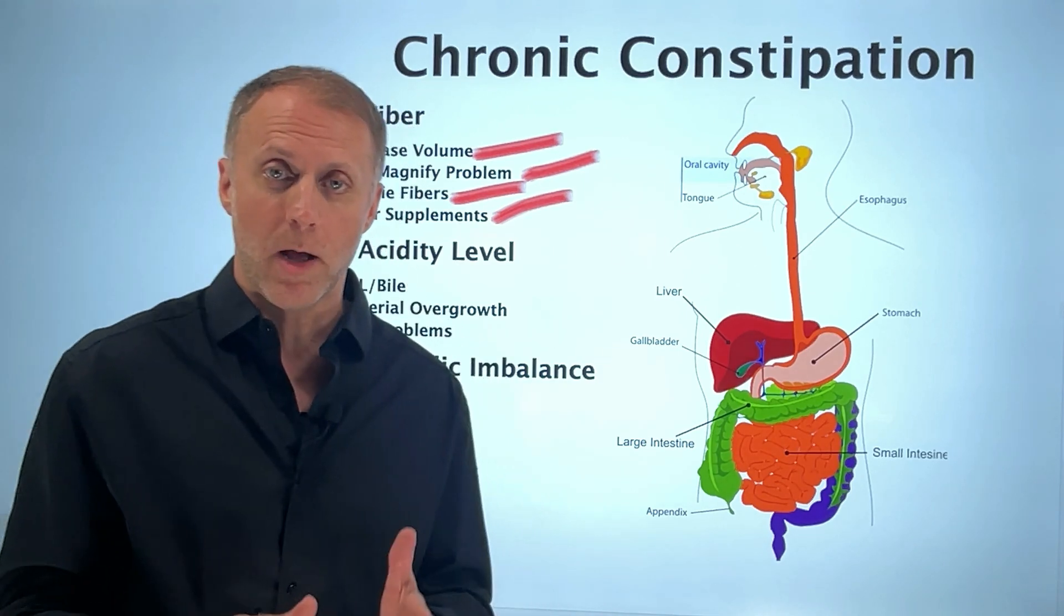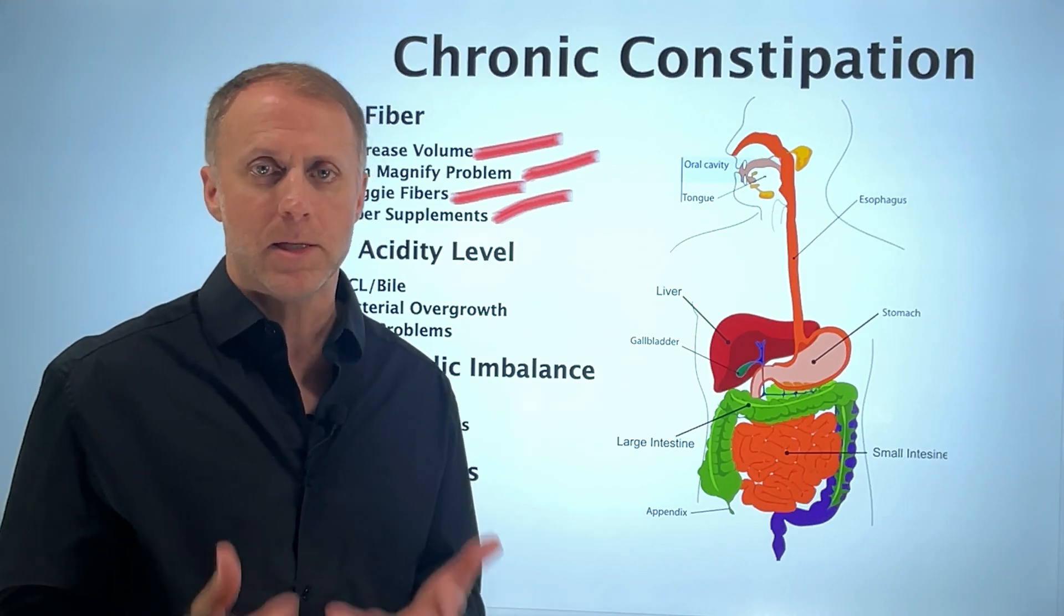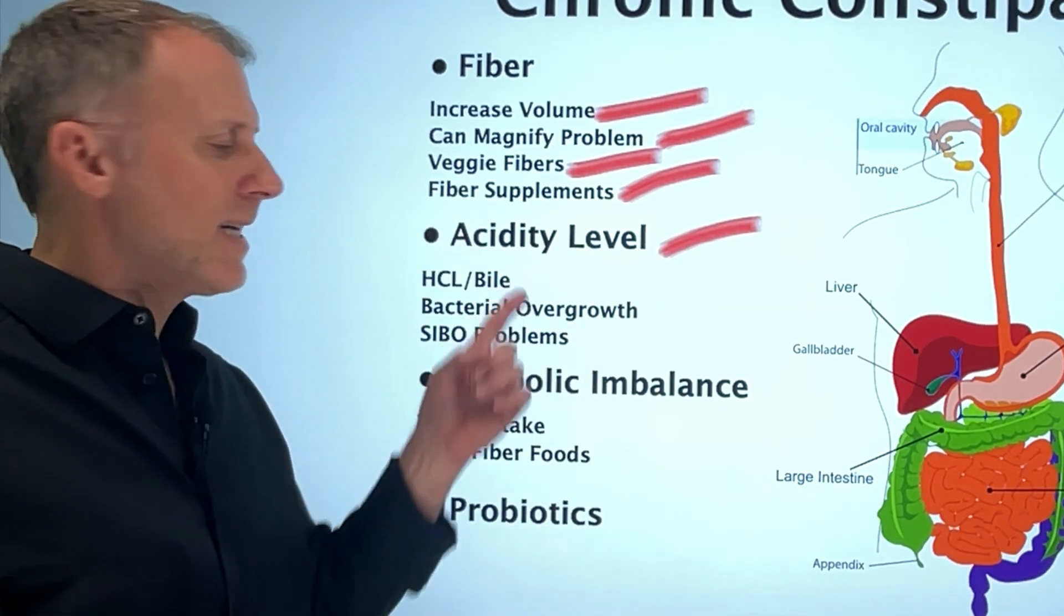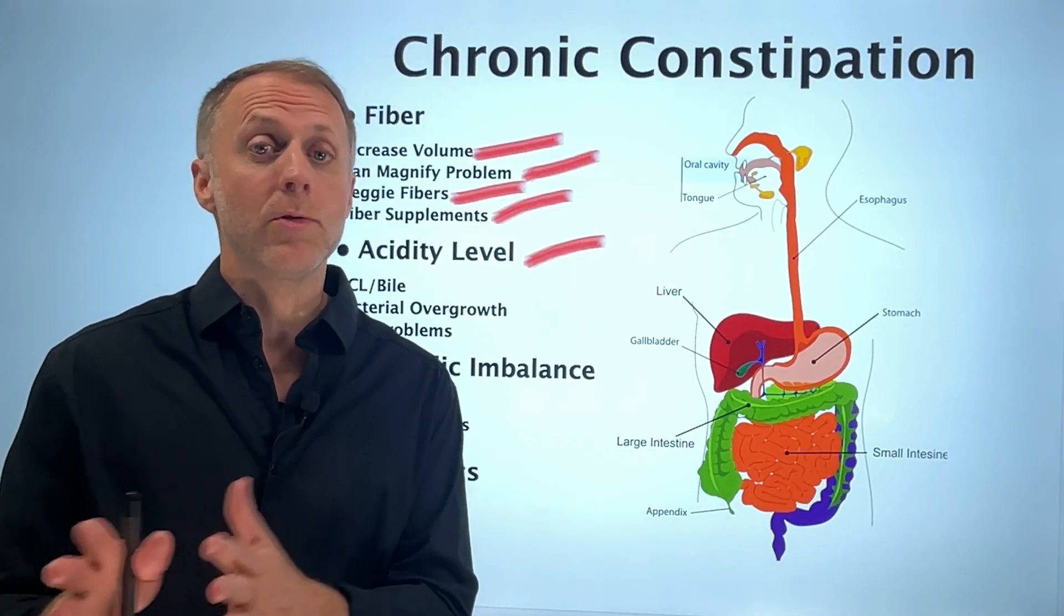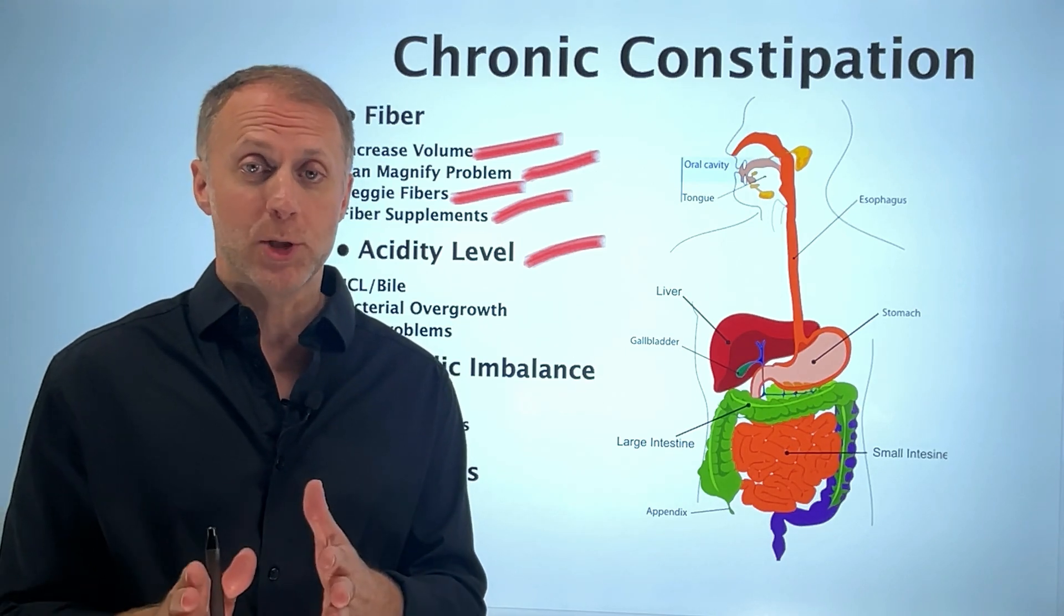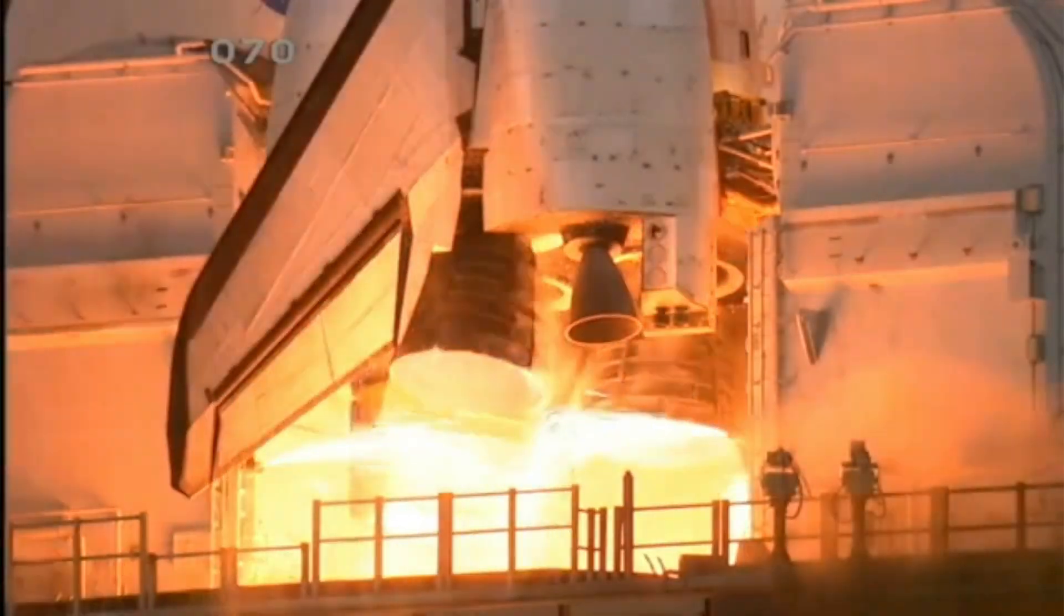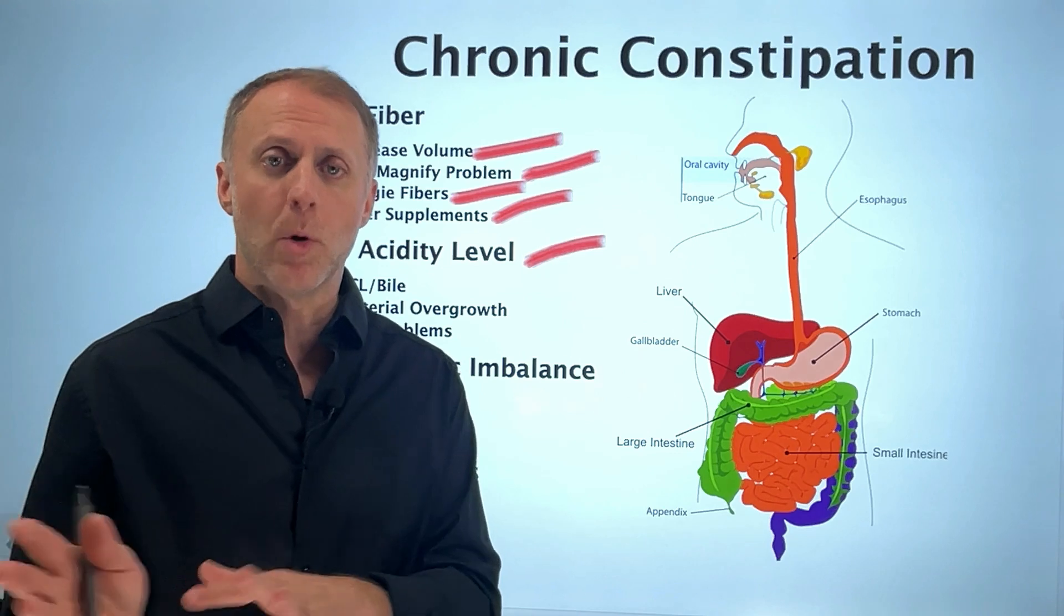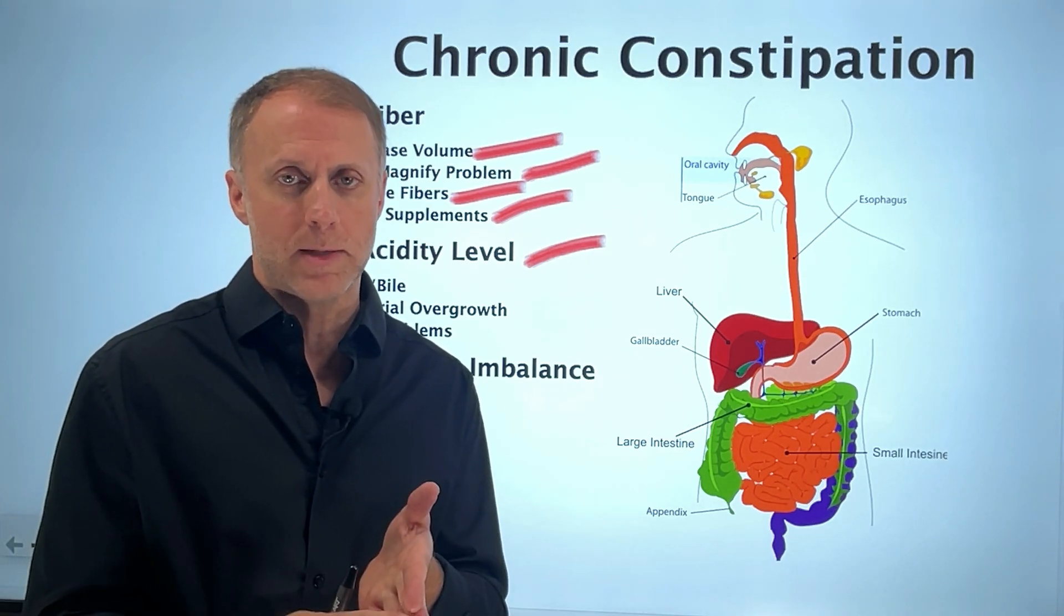So to really fix a chronic constipation issue, we need to understand the most common underlying causes. What we need to look at and understand is the acidity level of your stool really counts. It appears that the stool moves through the intestinal tract at a pace according to its acidity level. If a stool is leaning more on that acidic side, it can scream through the system. And if it's very alkaline, then the stool will move a lot slower and can get hard and dry and create a chronic constipation issue.